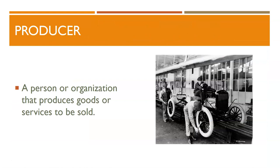The first word is producer. A producer is the term used in financial terms to describe any individual or business that makes goods or provides services to be sold. So a farmer is a producer of food, and if you work on the assembly line, you produce the cars.